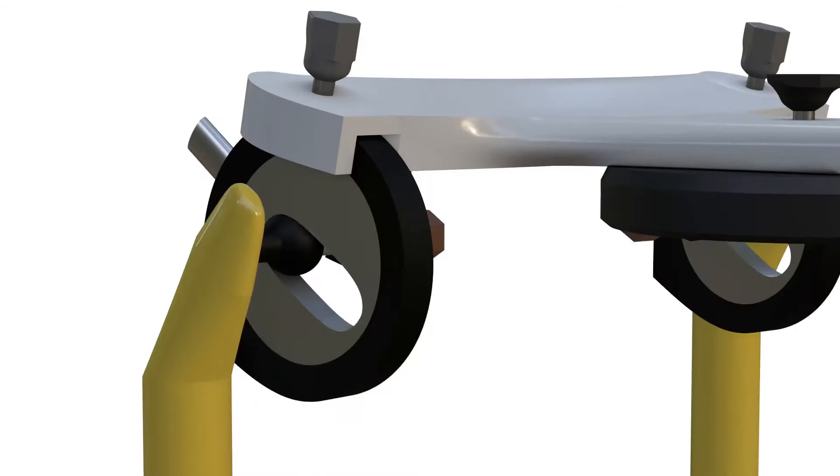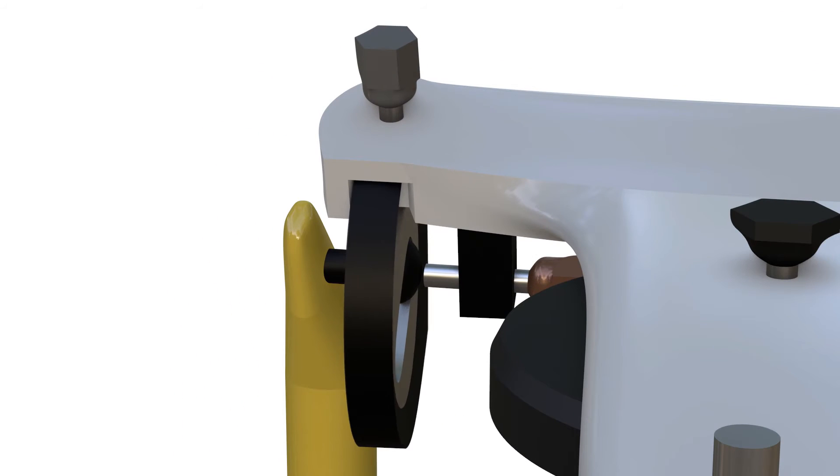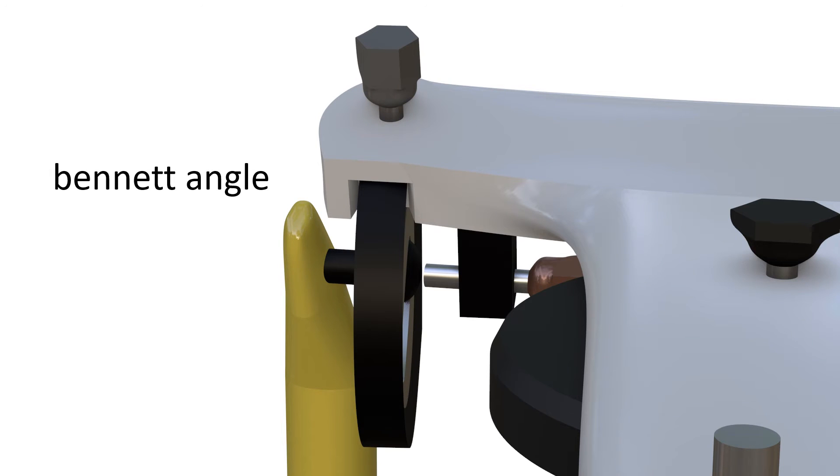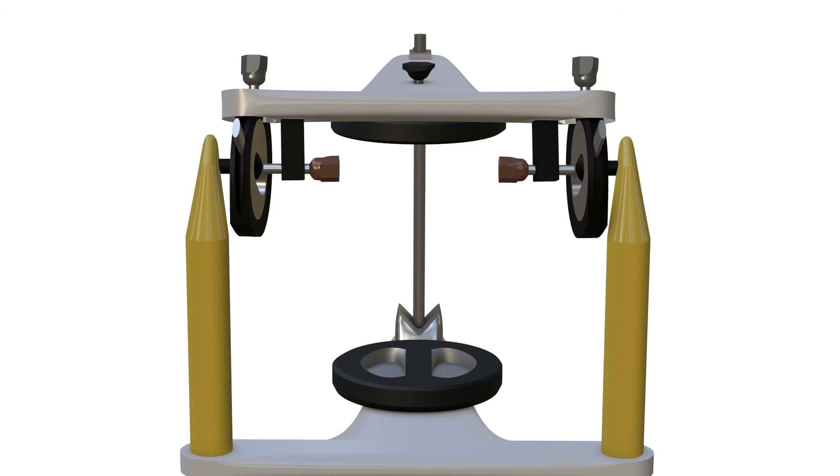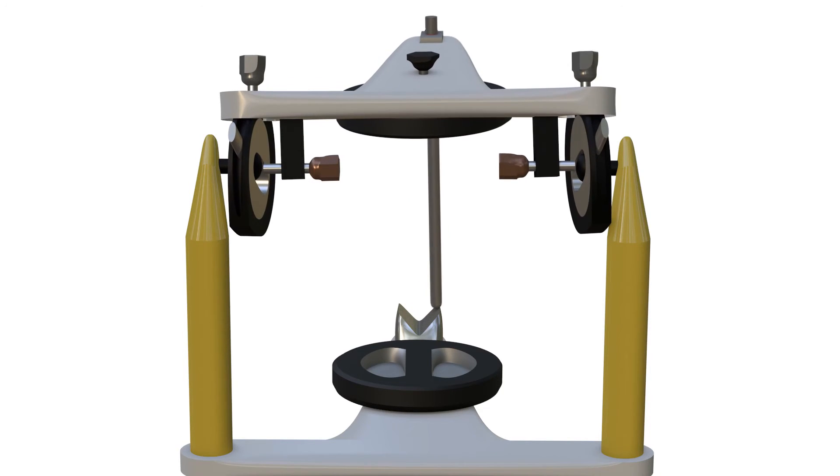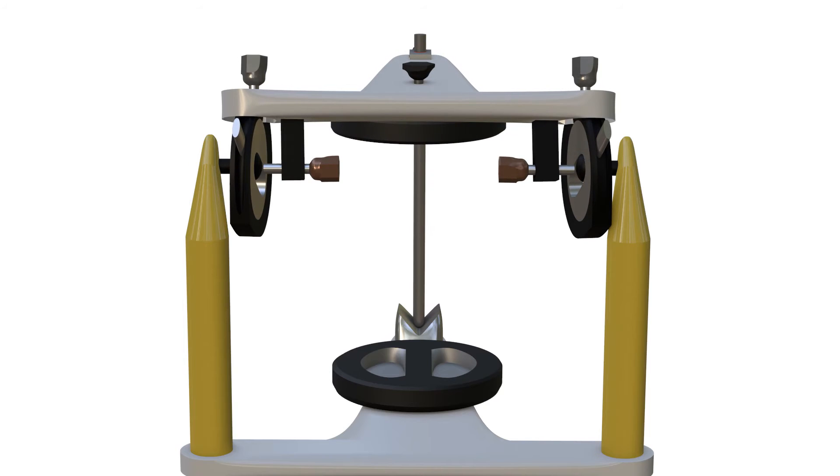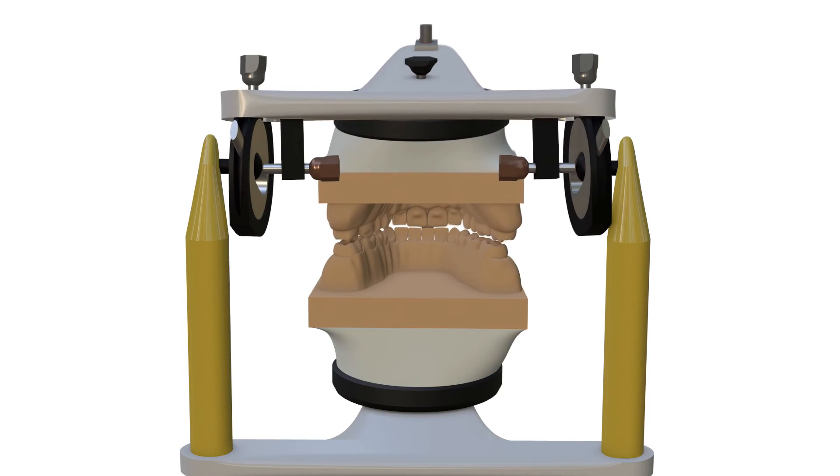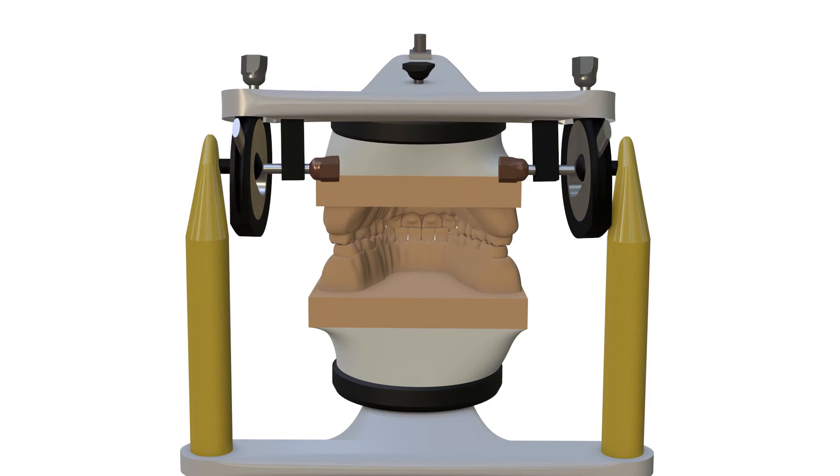From this point of view, it is advised to choose articulators that propose Bennett angle adjustments. The Bennett angle that is adjusted individually or with approximate values provides the dental technician to create an occlusal morphology required for a comfortable occlusion. However, for an effective Bennett angle, it is obligatory for the articulator to make immediate side shift, in other words, the Bennett movement.